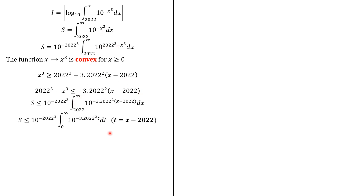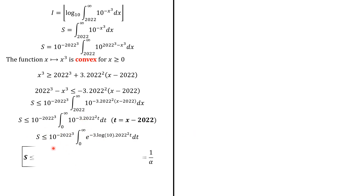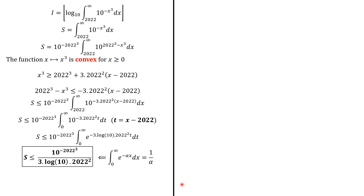What we do is perform a substitution: when we set t equals x minus 2022, dt is going to be dx and t will go from 0 to infinity. Next, we write 10 as e to the log 10. That's what we have here, and it is now straightforward to get an upper bound because we know that the integral from 0 to infinity of e to the negative alpha·x dx is 1 over alpha, and here alpha equals 3 times log(10) times 2022 squared. And we have our upper bound.